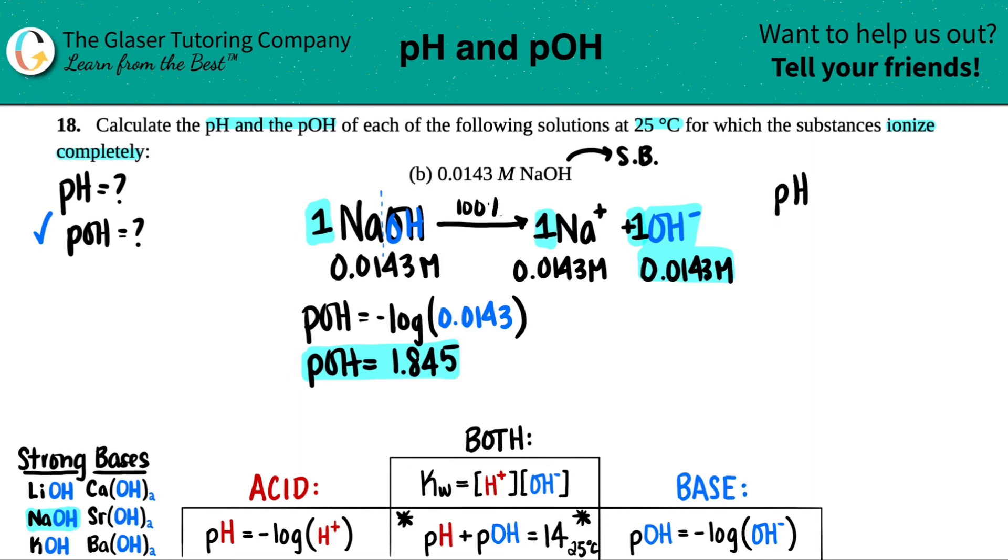So pH plus pOH equals 14. Now we're trying to solve for pH now. So if I just rearrange this formula and just try to solve for pH, it would be pH equals 14 minus pOH. You can rearrange it in the beginning, or you can just plug in your values. That's fine with me. I'm just doing this because it's easier for writing's sake for the video. So pH equals 14 minus 1.845 because that's what the pOH was.